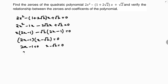So either 2x minus 1 equals 0, giving x equals 1/2, or x minus √2 equals 0, giving x equals √2. Therefore alpha equals 1/2 and beta equals √2. These are the zeros — half of the problem is done.